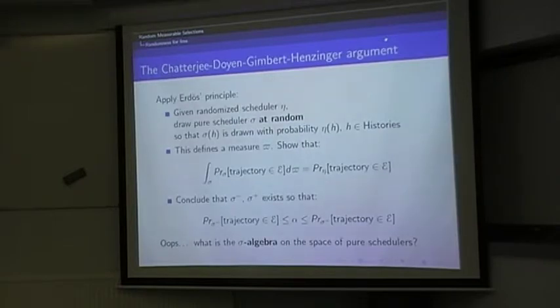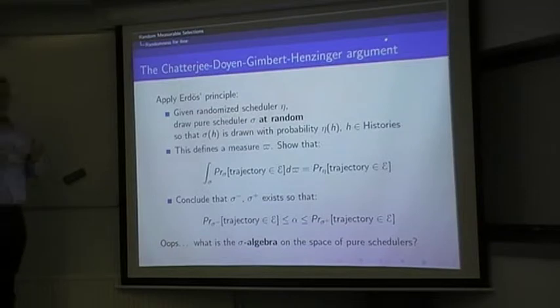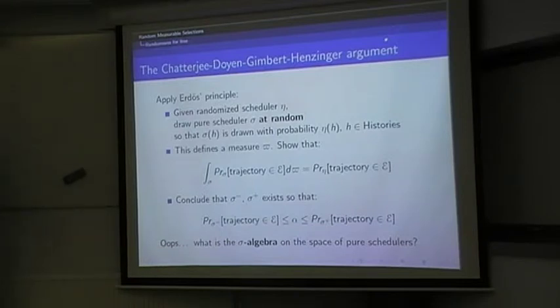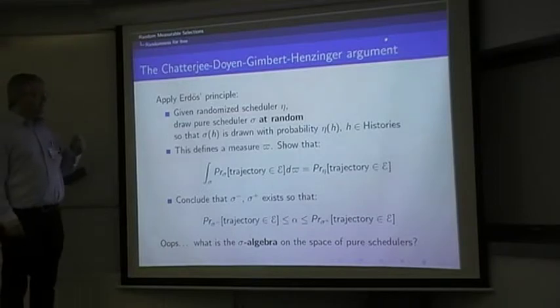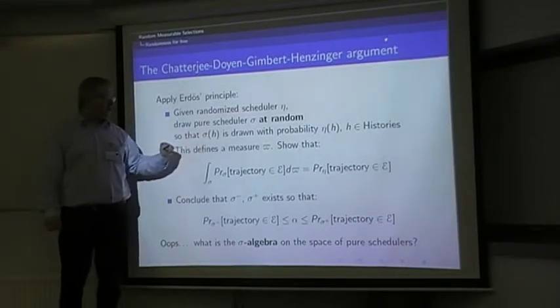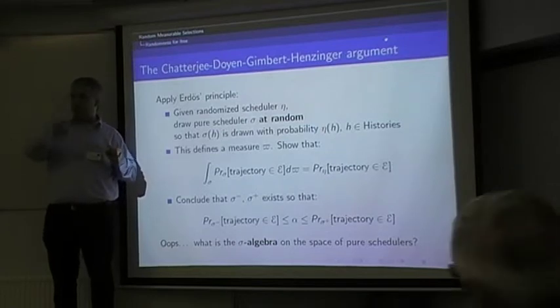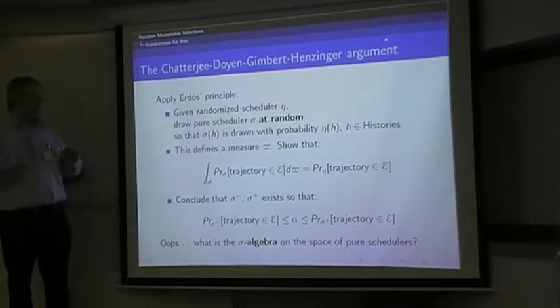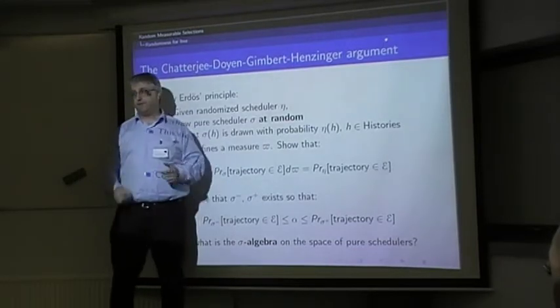Essentially what they do, you have to translate what they do to explain it this way, is to apply a principle that Erdős used to use many times. The idea is, I'm giving you a randomized scheduler, and instead of trying to find a scheduler, I draw a pure scheduler. I draw the pure scheduler itself at random, and I will draw it at random according to some probability which I have to build. But basically the idea is that for every history H, I will try to choose sigma of H, so the transition that sigma has to choose when having seen a history H, with the probability eta of H that the randomized scheduler gives me.